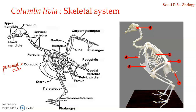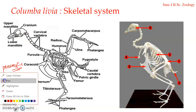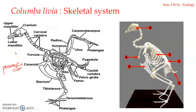The endoskeleton can be divided into two parts: the appendicular skeleton and the axial skeleton. The axial skeleton is formed of the skull, the vertebral column, the ribs, and the sternum which keeps the ribs together. These components form the axis of the body.